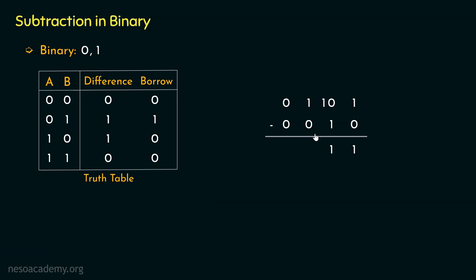Moving to the next unit, that place gives us 1 minus 0, so the difference is 1 with no borrow needed since the minuend exceeds the subtrahend. Finally, 0 minus 0 gives a difference of 0 with no borrow. Therefore, the subtraction of 1001 minus 0010 gives the result 0111.